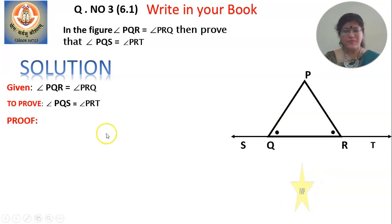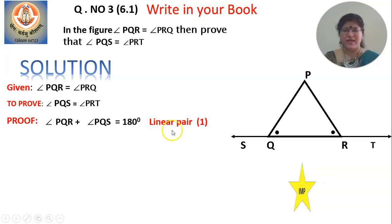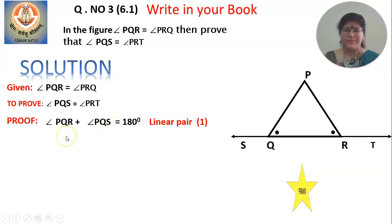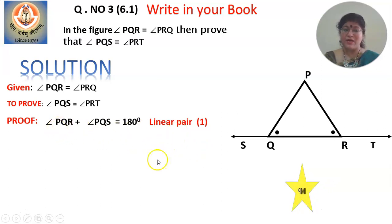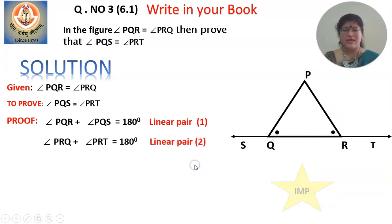The first statement: angle PQR plus angle PQS equal to 180 degrees, because they are angles in a linear pair. Now repeat the same with the other given angle. Since it is given that angle PRQ is congruent to angle PQR, write: angle PRQ plus angle PRT equal to 180 degrees, because they are angles in a linear pair.